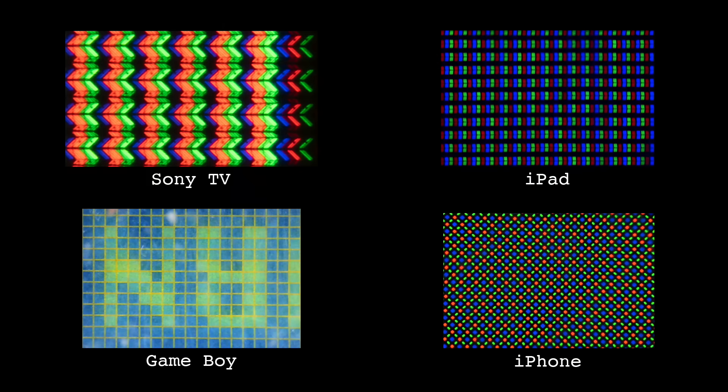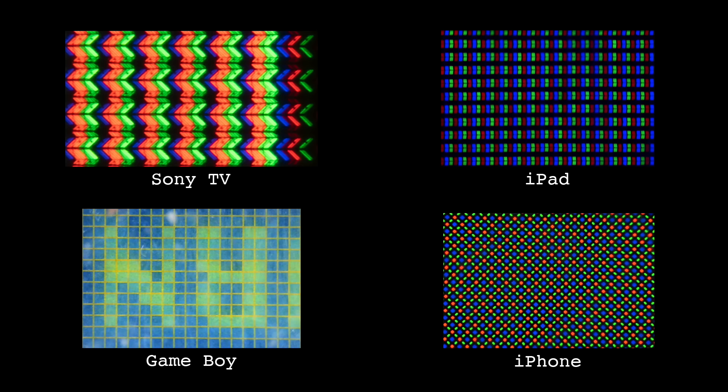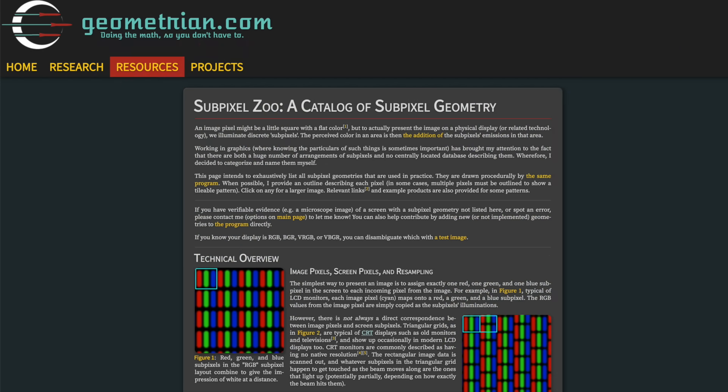Some were chevron-shaped, some were in stripe formations, some had a neat diamond pattern. These different formations are called sub-pixel geometry. And while I won't go too deep into this topic, I'll link to a neat page in the description that discusses all the different geometries.